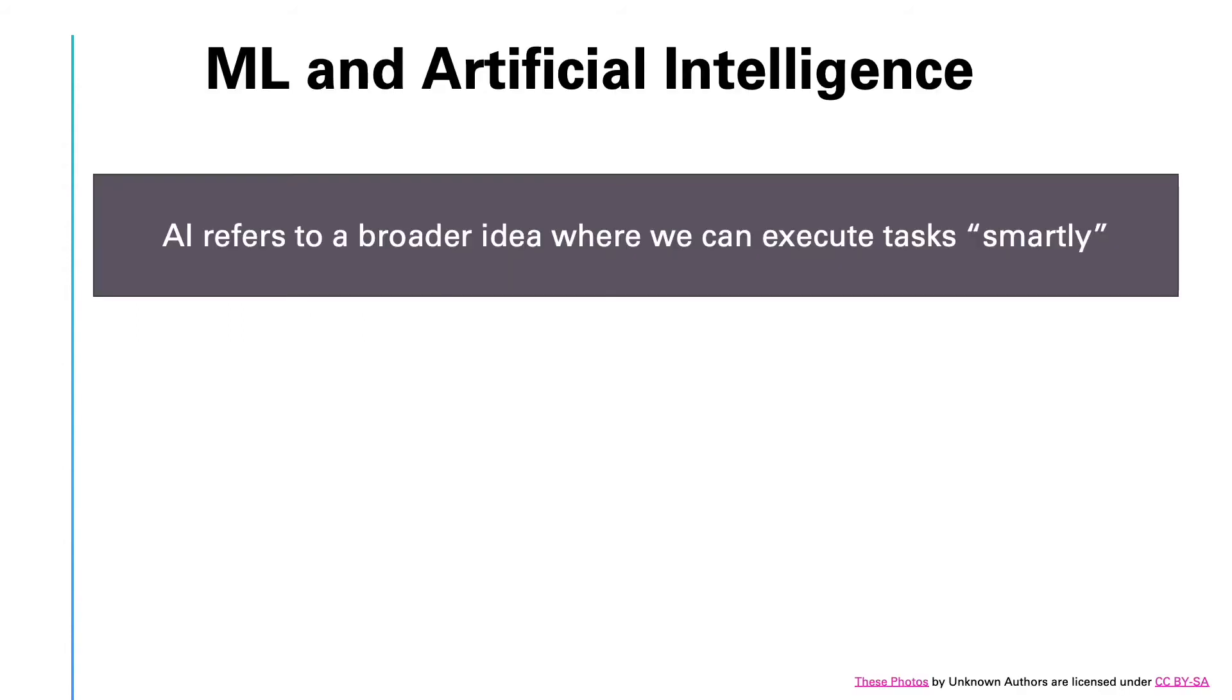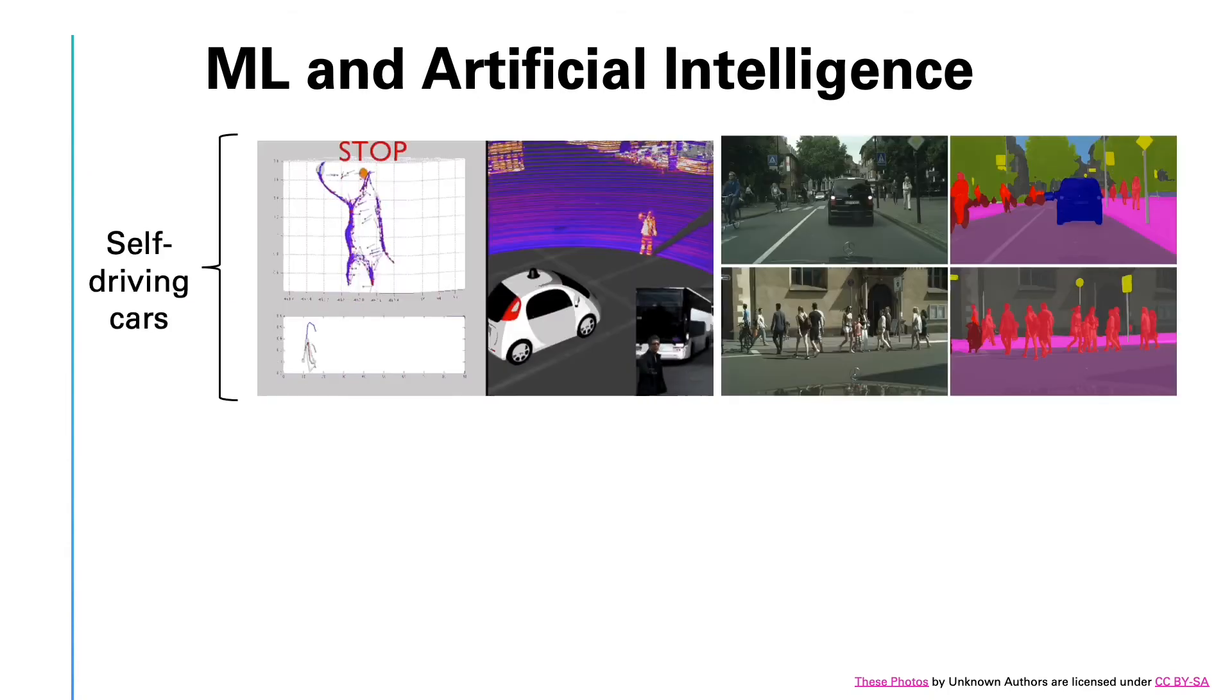Another point that I would like to emphasize is that artificial intelligence or AI refers to a broader idea where we can execute tasks smartly. That is, you can think of AI as the broad discipline of creating intelligent machines. Thus, machine learning or ML can be considered as a subset of AI. AI systems often use multiple machine learning modules within them. As an example of an AI system, let's consider self-driving cars. These are autonomous systems that learn how to drive, going from location A to location B.